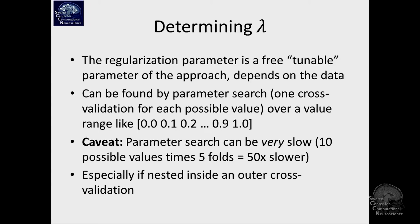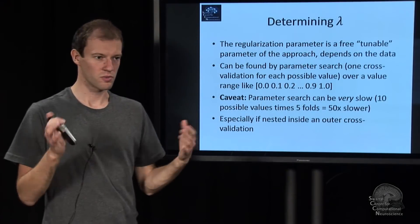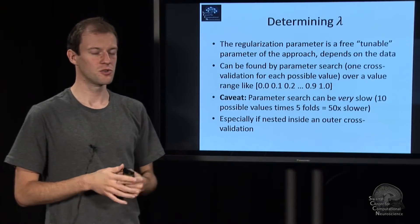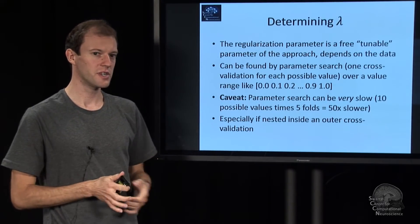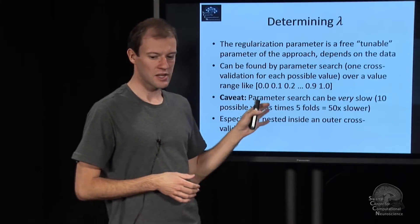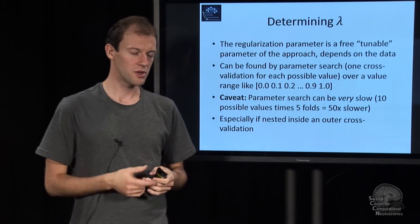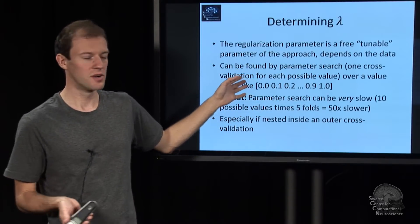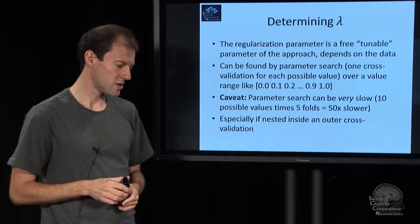That's a very general approach permeating much of machine learning, where we introduce free parameters to trade off complexity, and we cross-validate to find the best setting. Although there's fundamentally other ways to do it, that's an empirical way - it's kind of statistical bootstrapping and so on.